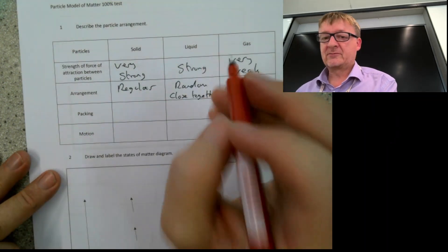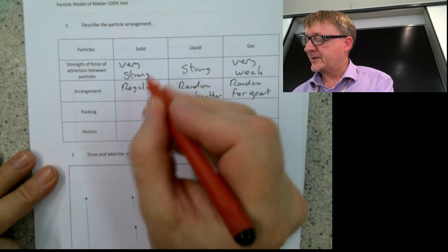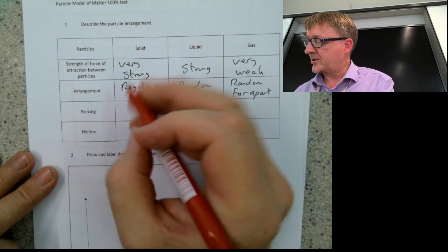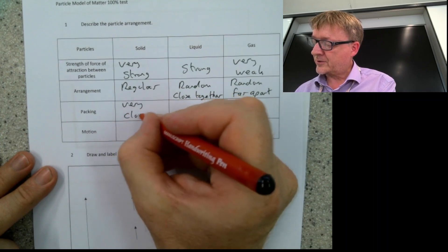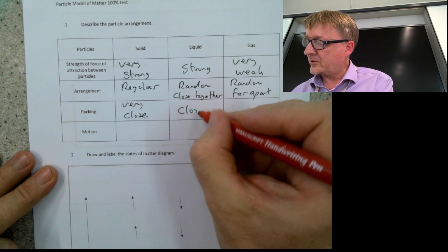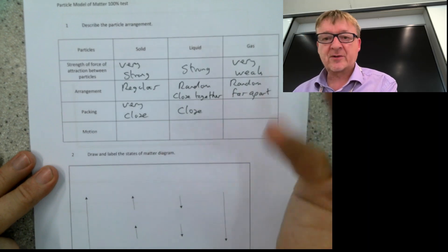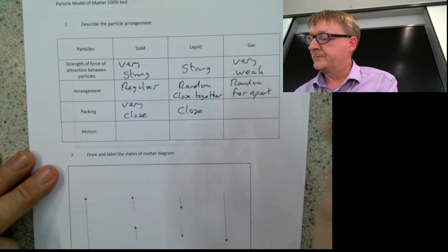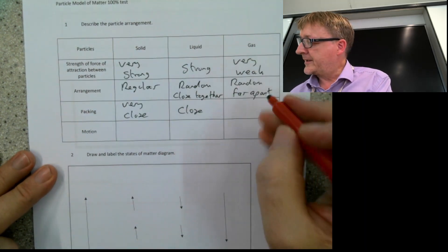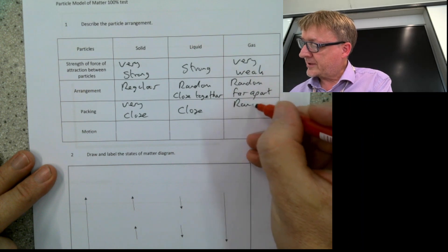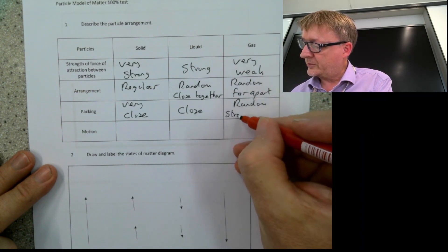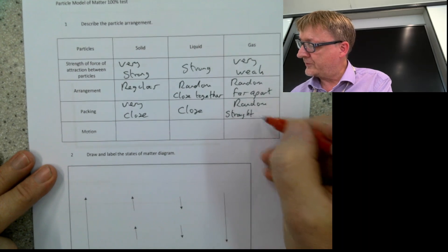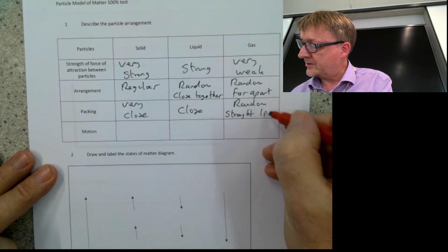The packing — how particles are packed into something. In a solid they are very close. In a liquid they're close but have little gaps in between them. In a gas the particles are random and they are moving in straight lines all the time.